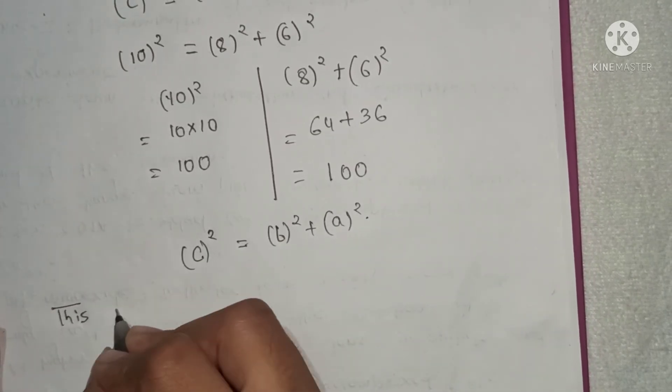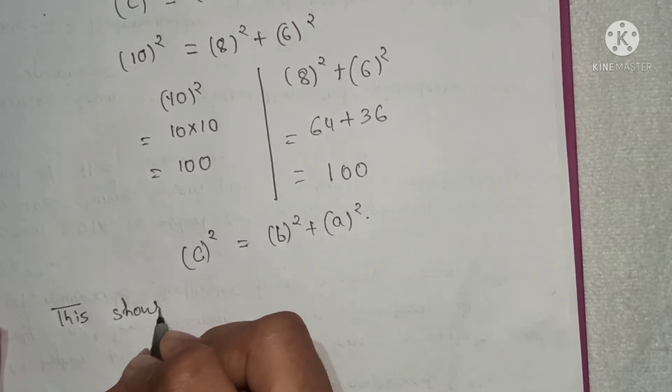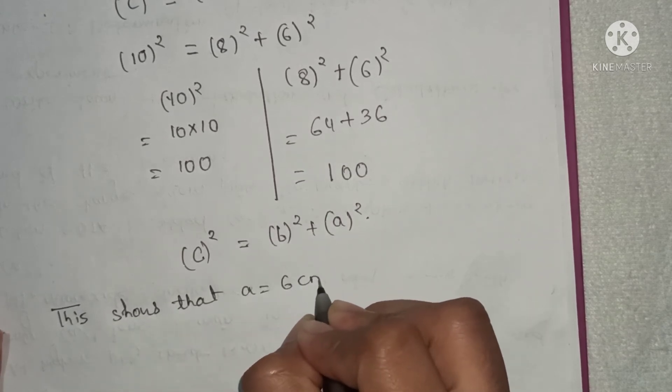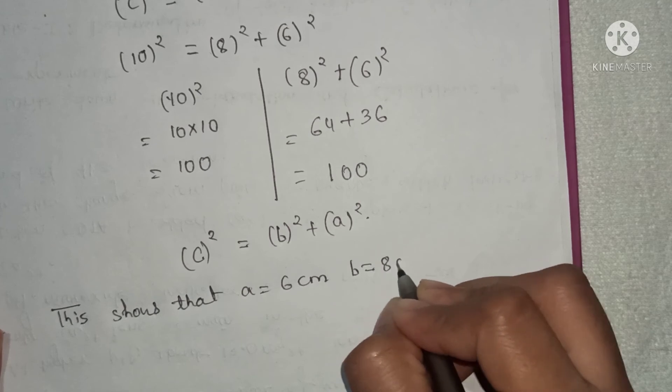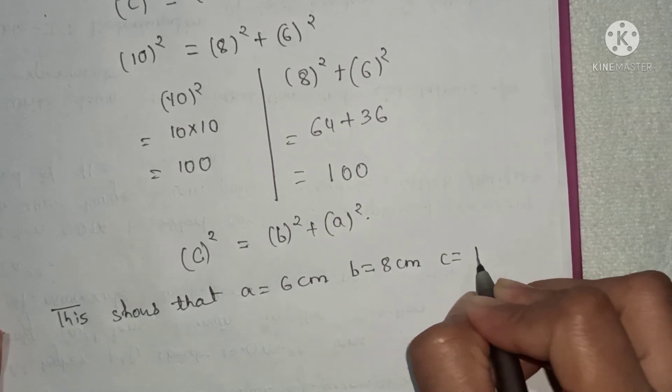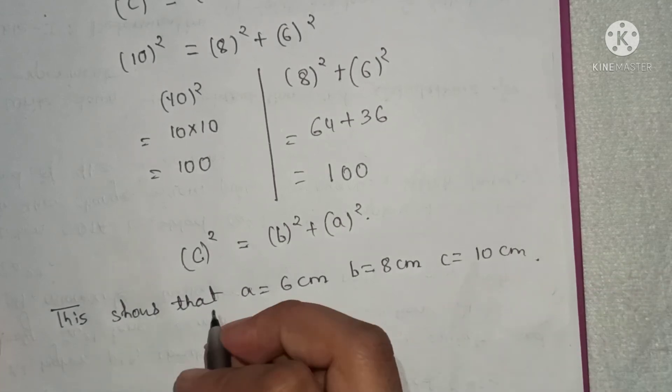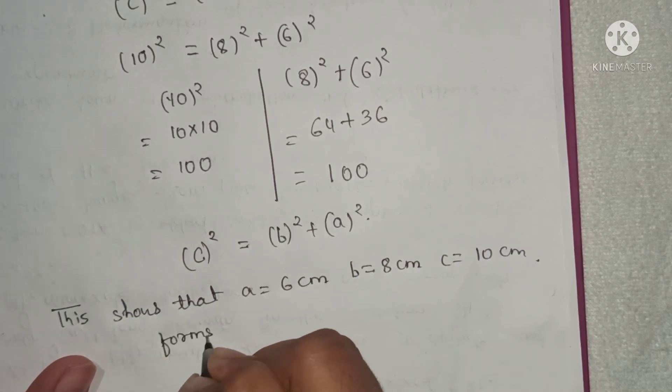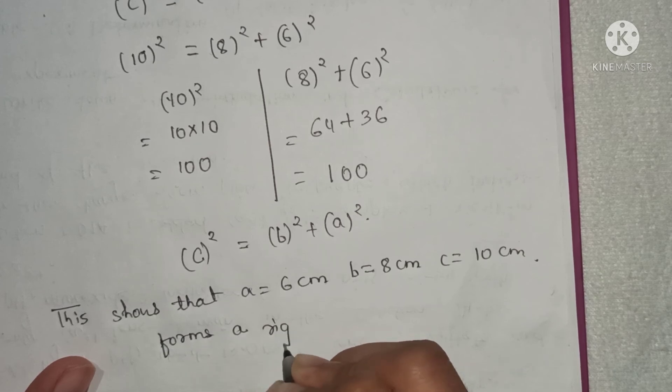This shows that a equals 6 centimeters, b equals 8 centimeters, c equals 10 centimeters forms a right triangle.